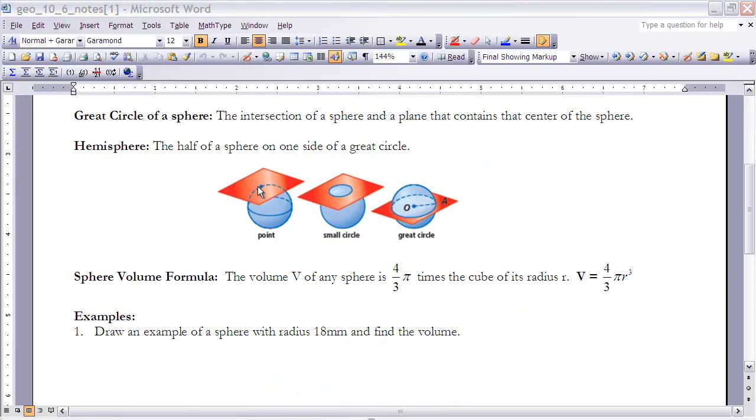Now that we've defined what a sphere is, I want to look at taking a sphere and intersecting it with a plane. If I take a sphere and intersect it with a plane, there's three things that could happen. The plane could just touch the sphere, in which case the intersection of those two things would be just a point.